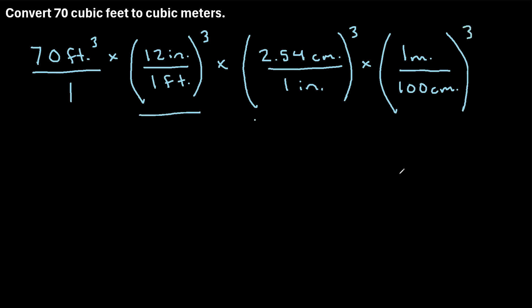Now for these three expressions, where we have them raised to the power of 3, what we can do is distribute that 3 into both the numerator and the denominator. So this would become 12 inches cubed. This would be 1 foot cubed.